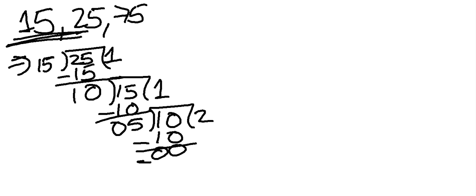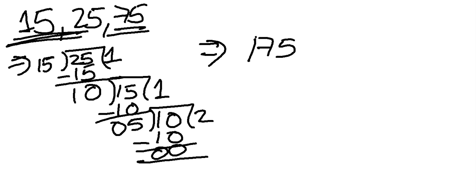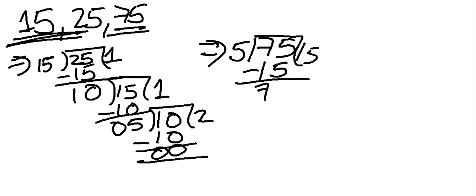As I told you, the smaller number will be written outside. We write 5 here. Now 5 comes 15 times in 75 — 5 fifteens are 75.